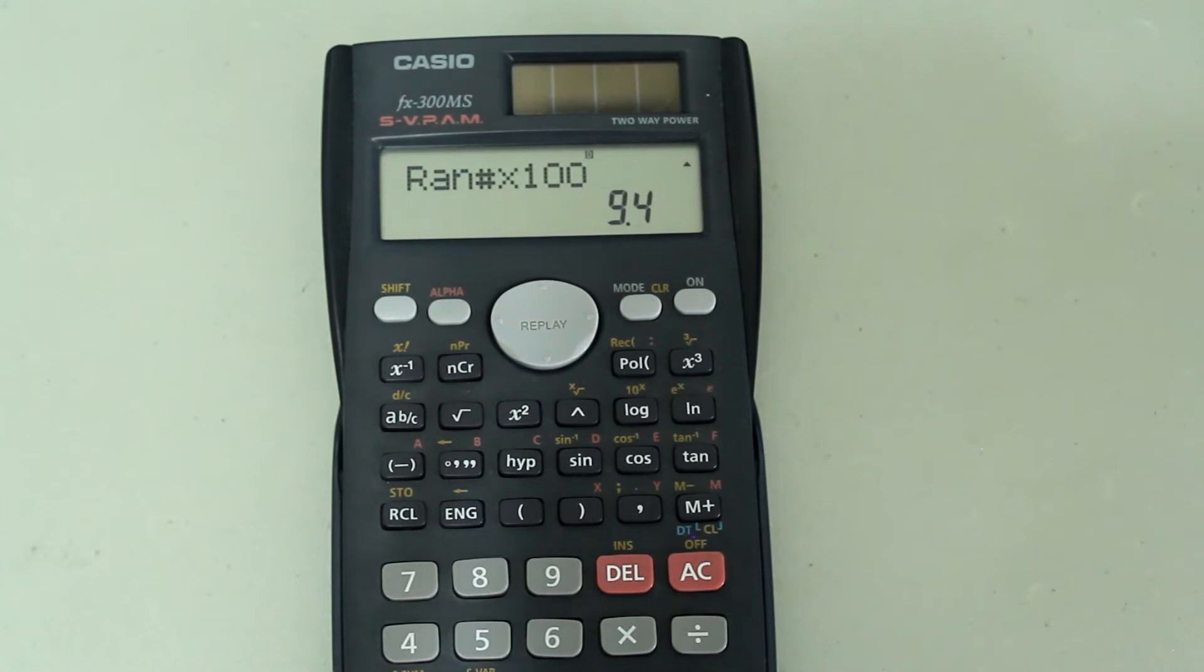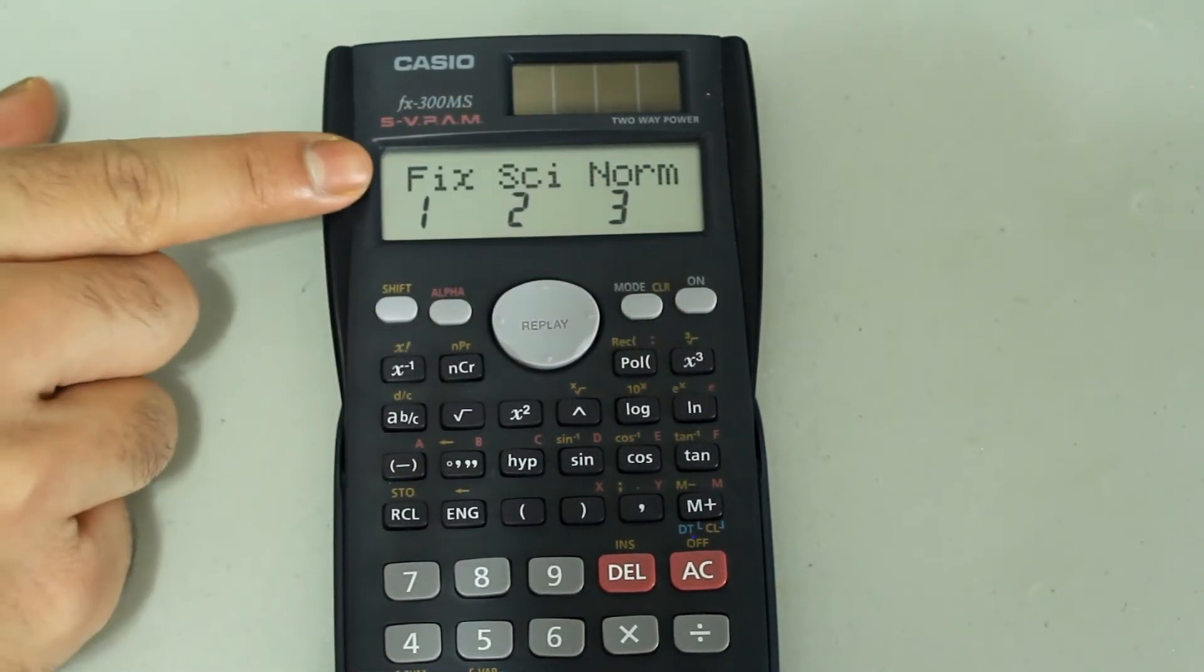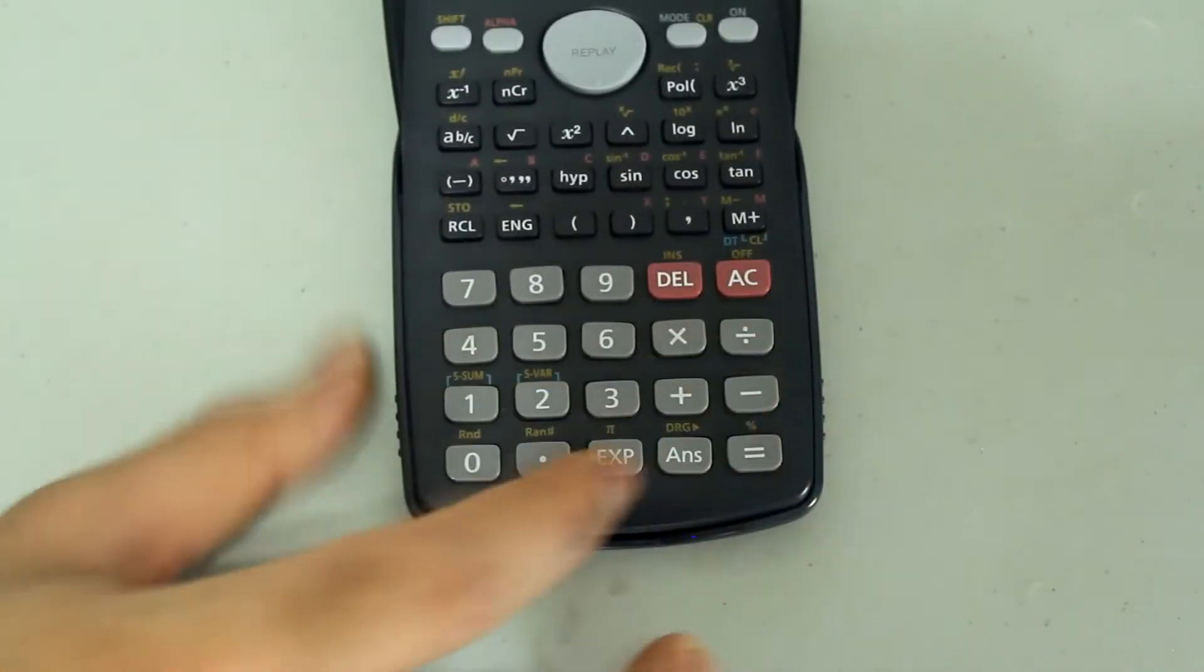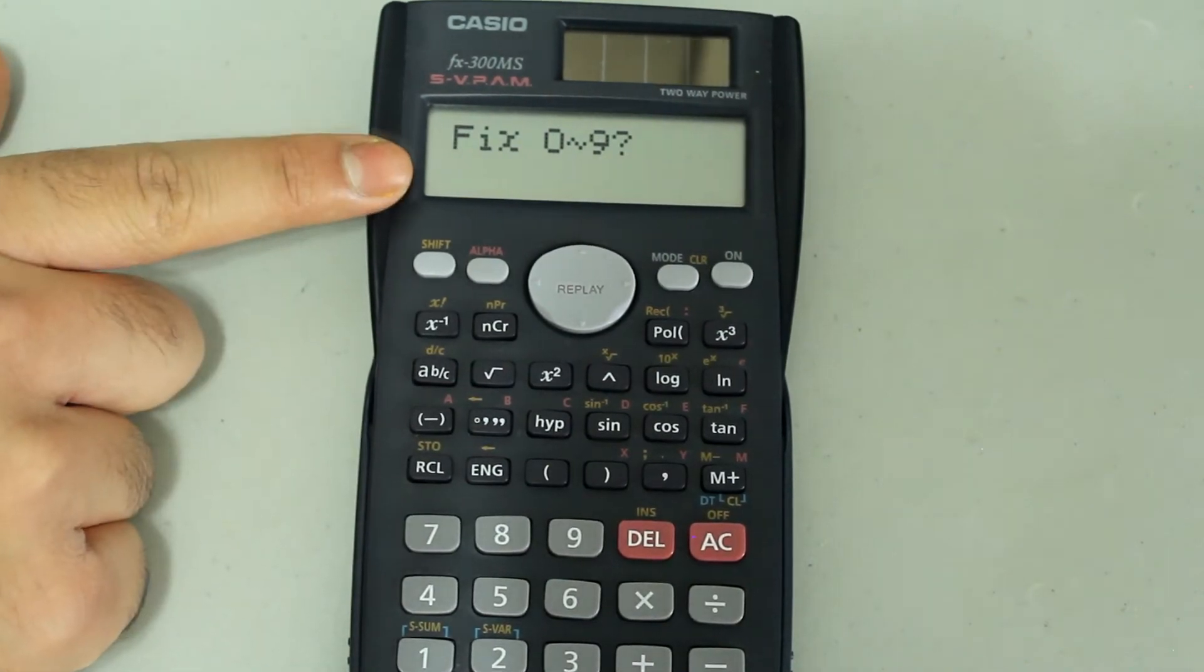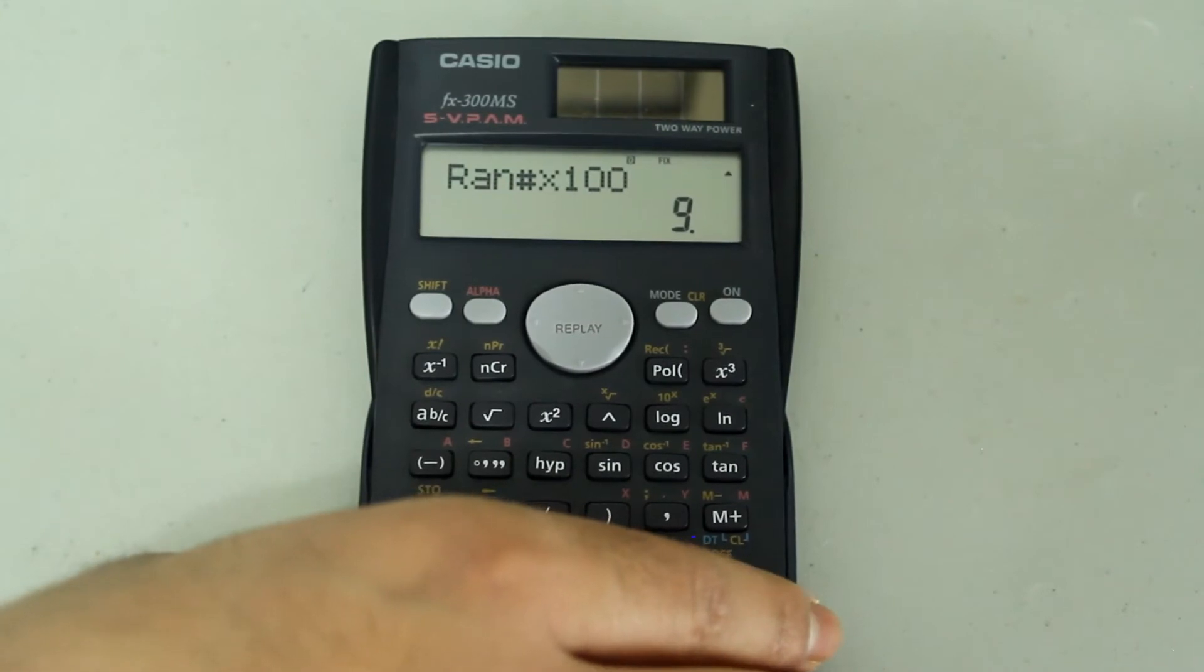If you want your number to be rounded to the nearest whole number, go to mode. Press the mode button a few times until you see fix on the screen. Press 1 on the number pad to select fix. Then this screen comes up. Press 0 to let the calculator know that you want 0 decimal places.